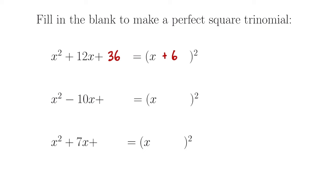In the next example, we have x squared minus 10x. If we take half of negative 10, we get negative 5, and if we square it, we get 25. And it's plus 25. The way this factors is x minus 5 quantity squared — notice that the minus 5 is half of the minus 10. This last one is a little bit different because we have 7, which is an odd number. We still take half of 7, which is 3.5, or 7 halves. So we need to put 7 halves squared here, which you could write as 49 over 4, and this factors as x plus 7 halves squared.